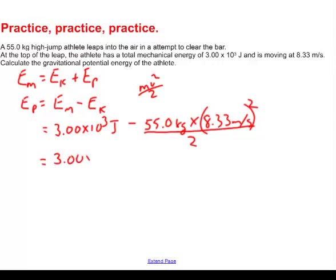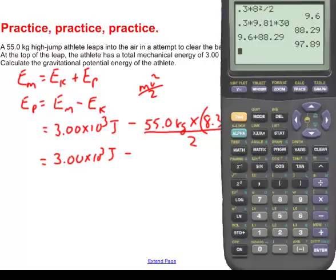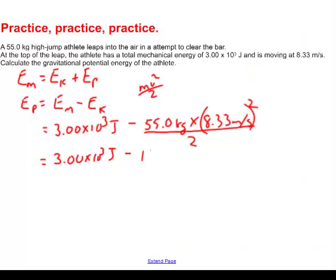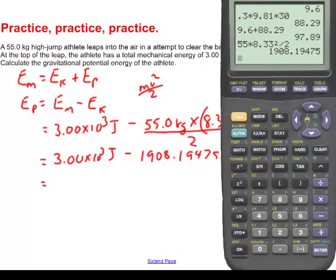Okay, next step. 3.00 times 10 to the third joules. I'll just leave that. Take away. Now let's do a little bit of calculating here. We've got 55 multiplied by 8.333 squared. Don't forget to square that thing. And then divide that by 2. All right. I've got 1,908.19475 joules. Now don't round off. When you're in the middle of a calculation, we're not done yet, don't round off until we get to the very, very end of this thing. So I have one more step to go.